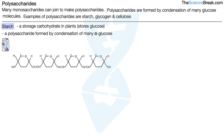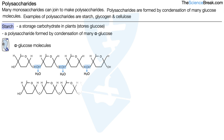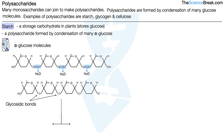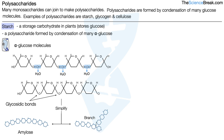This is the structure of starch. We have many alpha glucose molecules, and through condensation with the removal of a molecule of water, they join together to make a chain held by glycosidic bonds. Simplifying the diagram, we can see there are two ways starch molecules are arranged: amylose on the left and, when branched, amylopectin. These two terms are not mentioned in the specification, however you can be credited for their use in terms of the structure of starch.